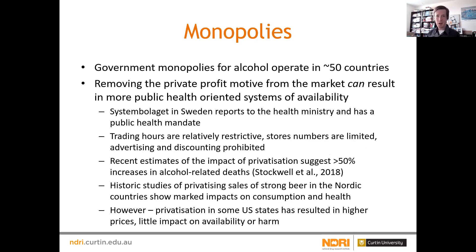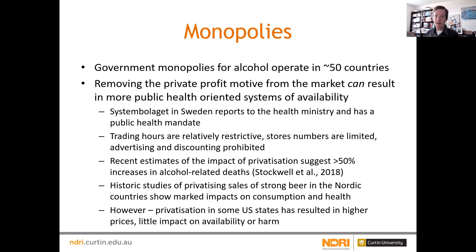The next step down the chain is a government monopoly — rather than having a private market, you have the government controlling the sale and operation of the alcohol market. This is still in play in something like 50 countries around the world in some form, whether it's a monopoly on retail, wholesale, or production. Stripping back the private profit motive from a market can result in a more public health-oriented system of availability. The classic example is the Swedish model, Systembolaget, the alcohol retail monopoly, which reports to the health ministry with a clear mandate to maintain public health and reduce harm from alcohol.